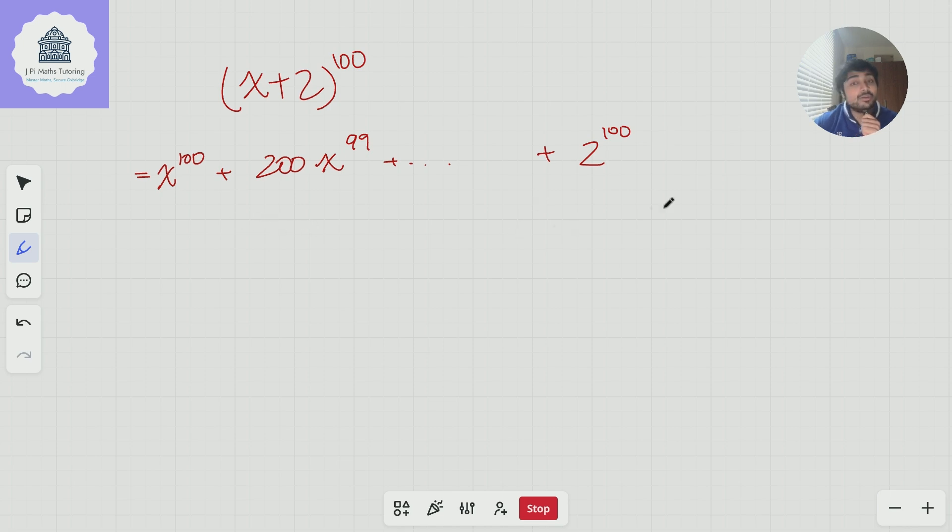And the question is, out of all the coefficients of x here, which one is the greatest? So the way I'm going to answer this is I'm going to let c_i equal the coefficient of x to the i in this expansion. For example, c_99 would equal 200 here.